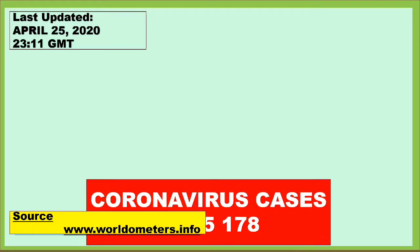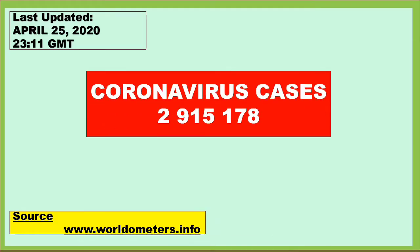Hello everyone. According to www.worldometers.info, last updated April 25, 2020 at 23:11 GMT, there are 2,915,178 people infected by coronavirus around the world. Do you know how many confirmed cases of COVID-19 are in your country — millions or hundred thousands?